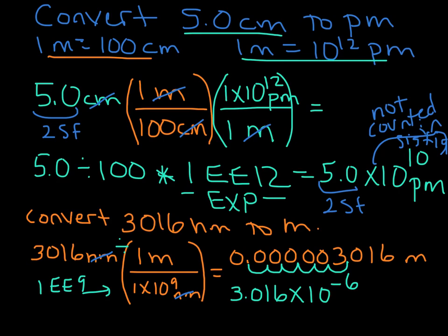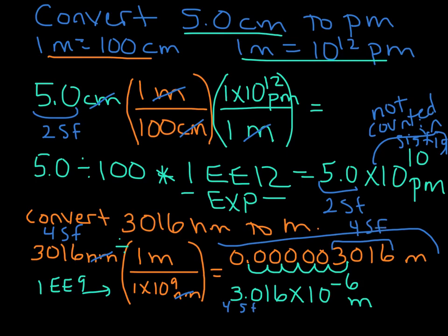So we have 3.016 times 10 to the negative 6 meters. We have 4 sig figs in our starting value and 4 sig figs in our answer. All of these preceding zeros do not count as significant figures — we don't start counting significant figures until we reach the first non-zero number, and then everything after that is significant.